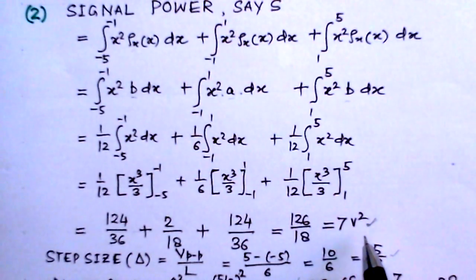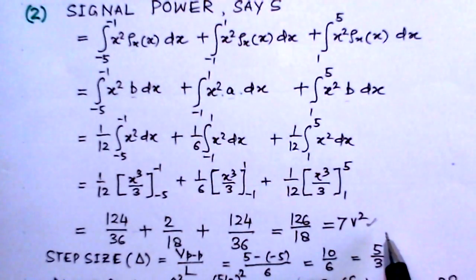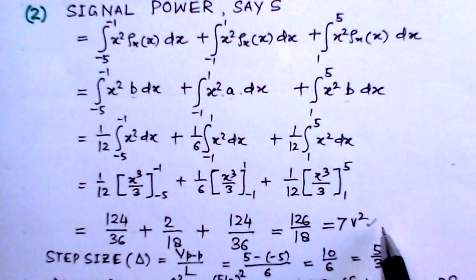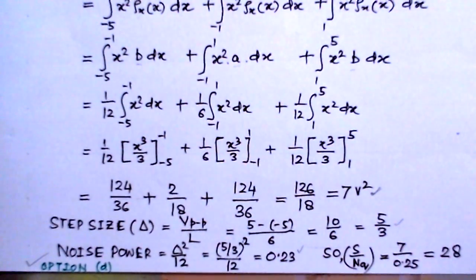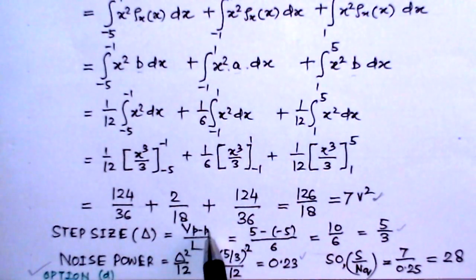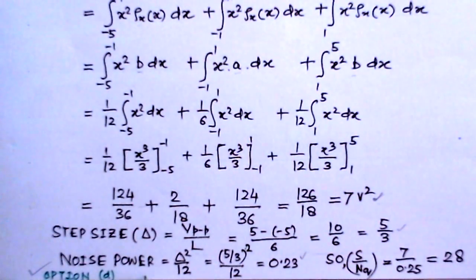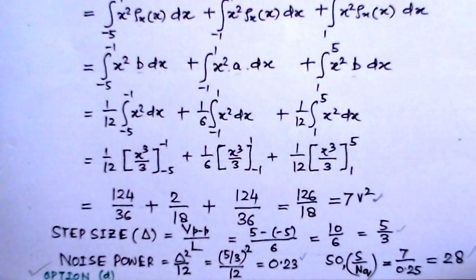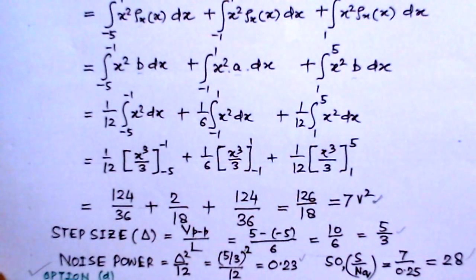This mean square value gives the signal power. Taking the resistance as 1 ohm without loss of generality, 7 volt squared equals 7 watts. The step size is determined as V_pp over L, which is (5 minus −5) over 6, giving a step size of 5/3. The quantization noise power is delta squared over 12, which comes to approximately 0.23. Therefore, the signal-to-quantization noise power ratio is 7 divided by 0.25, which equals 28. This corresponds to option D.